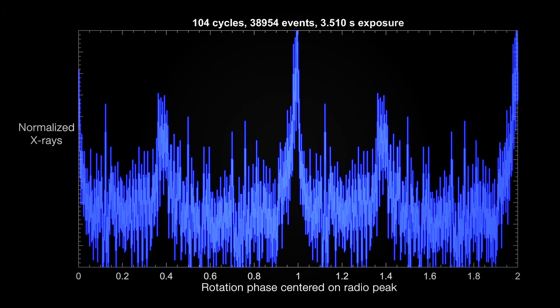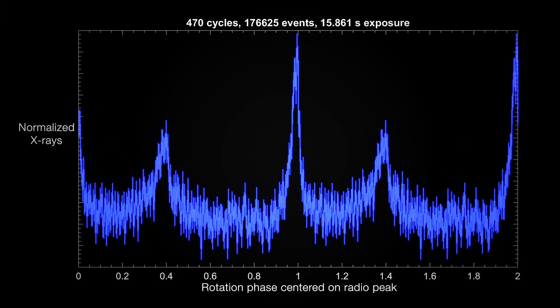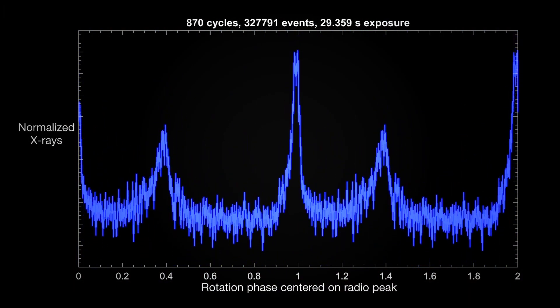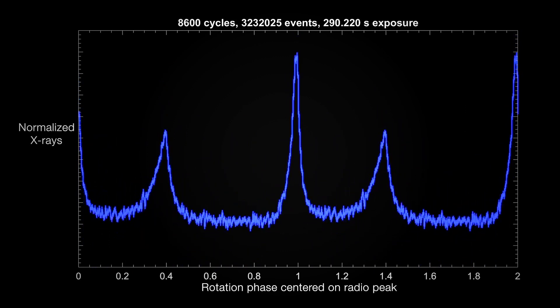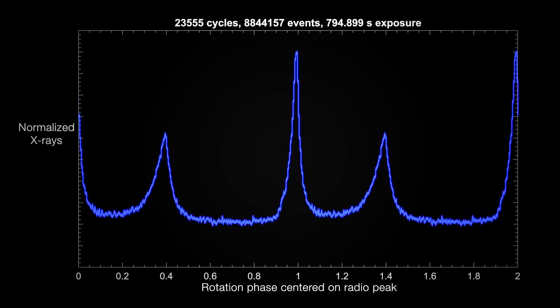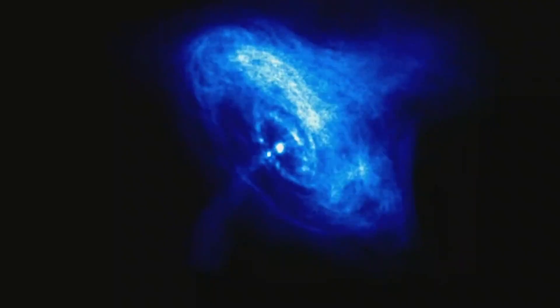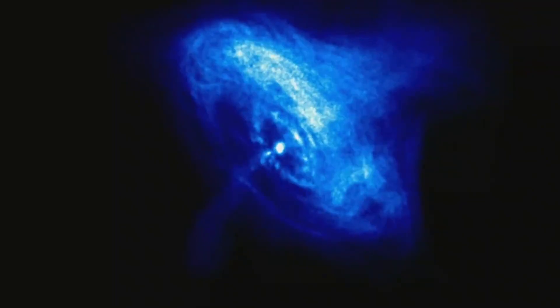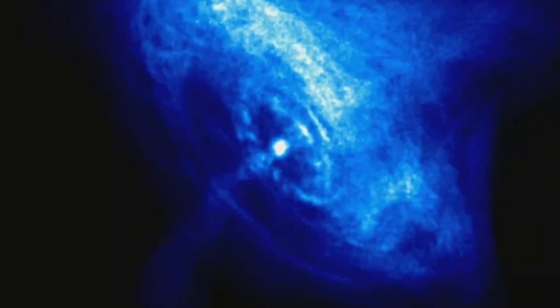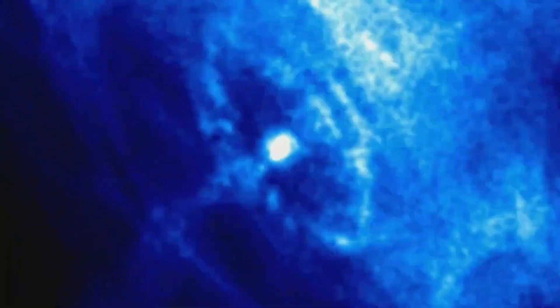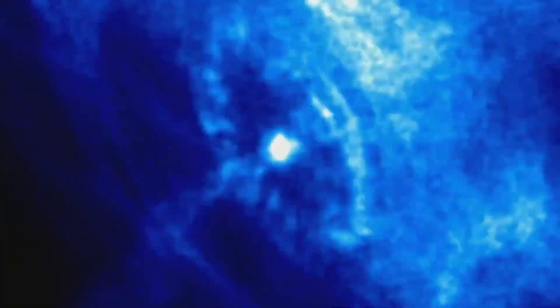Observing the Crab simultaneously with NICER and radio telescopes in Japan, astronomers captured data over some 3.7 million rotations. They show a nearly 4% increase in X-ray emission with each giant pulse. This means the phenomena responsible for giant radio pulses produce 10 or more times the energy previously estimated from radio and visible data alone.